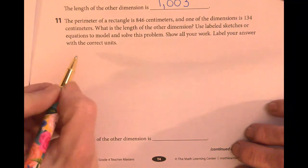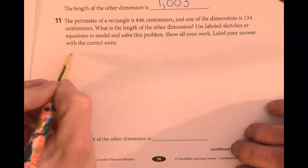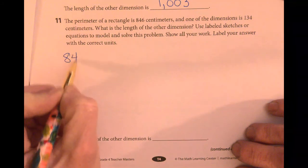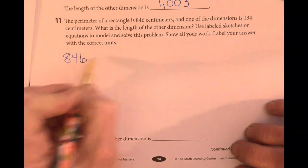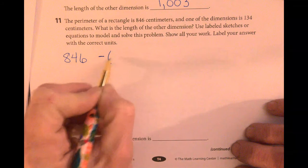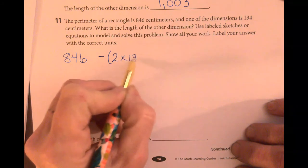So if the perimeter is 846, I will subtract 2 times 134.